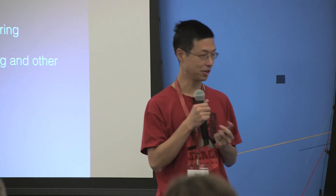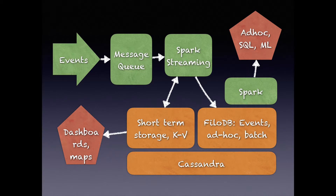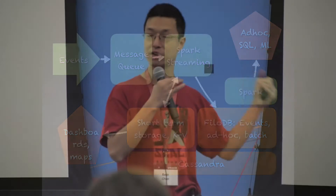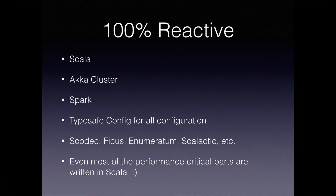FiloDB sits on top of Cassandra. Cassandra is an excellent database if you want to write lots of small data randomly and read it back randomly — for example dashboards with low latency. Where Cassandra does not work as well is for ad hoc queries that might take a long time, building machine learning models, or analytics applications where you need to read a lot of data. FiloDB fills that gap — you can use it as a store for reading a lot of data at once, and it is 100% reactive.